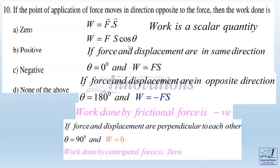One more condition: if the force and displacement are perpendicular to each other, then cos 90 is zero, so the work done is equal to zero. An example is the work done by centripetal force. In circular motion, the centripetal force acts radially inward, while the particle moves tangentially. They are mutually perpendicular, so the work done by centripetal force is zero.